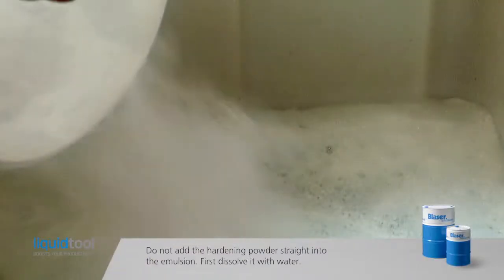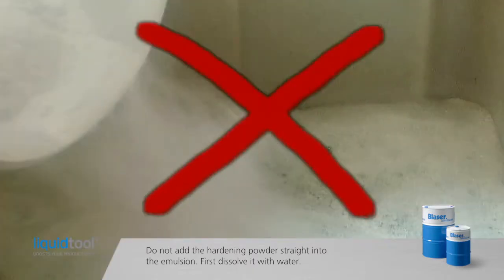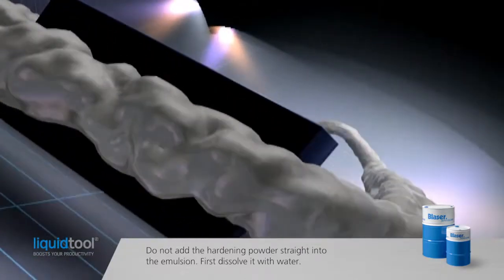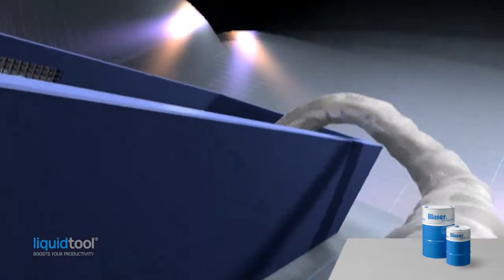But do not add this hardening powder straight into the emulsion. It will not dissolve quickly enough to distribute uniformly throughout the system. It will cause excess local hardness and resultant instability and splitting of the emulsion.